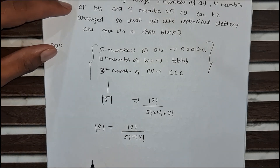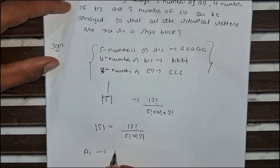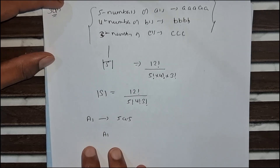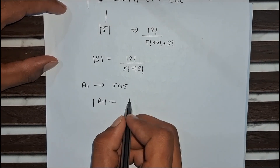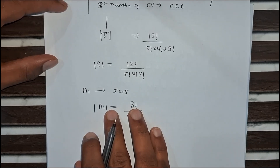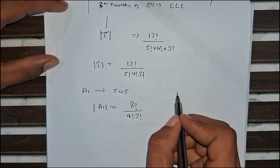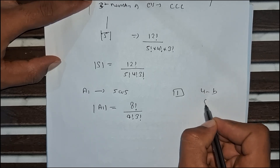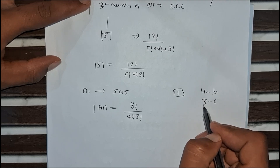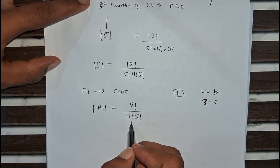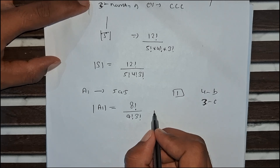Let A1 be the set of arrangements where all 5 A's are together. We consider the 5 A's as 1 block. The remaining letters are 4 B's and 3 C's, giving 4 plus 3 equals 7, plus 1 block equals 8 positions. So A1 equals 8 factorial divided by 4 factorial times 3 factorial.